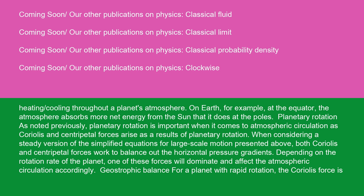Planetary rotation: as noted previously, planetary rotation is important when it comes to atmospheric circulation as Coriolis and centripetal forces arise as a result of planetary rotation. When considering a steady version of the simplified equations for large-scale motion presented above, both Coriolis and centripetal forces work to balance out the horizontal pressure gradients. Depending on the rotation rate of the planet, one of these forces will dominate and affect the atmospheric circulation accordingly.